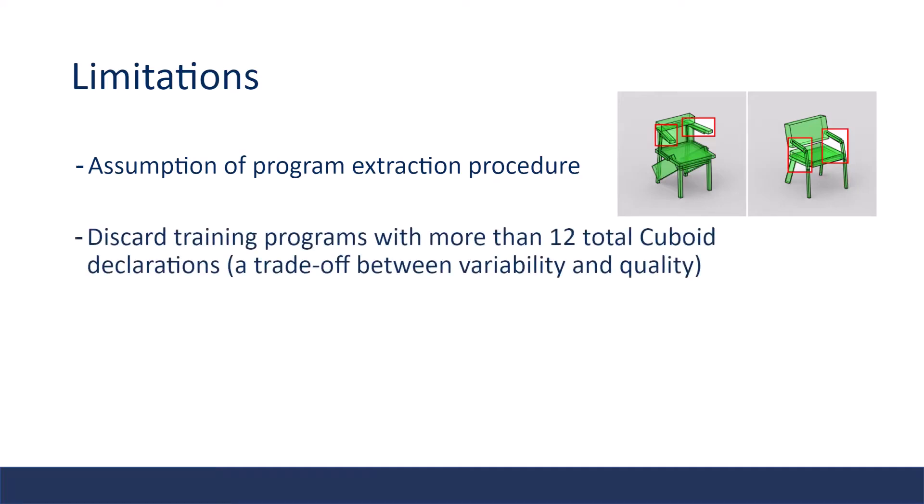Secondly, due to the trade-off between variability and quality, the model discards training programs that with more than 12 total cuboid declarations, so many complex programs are never learned.